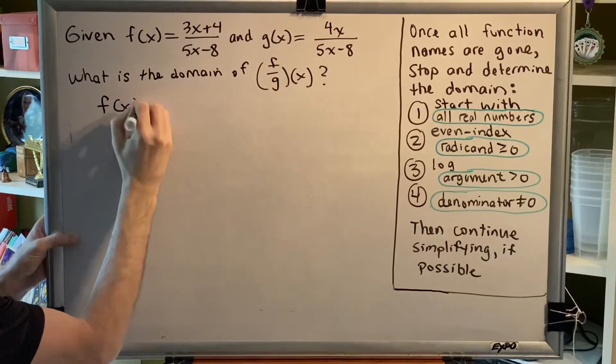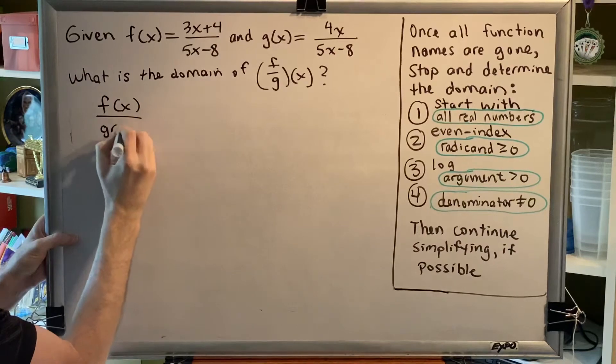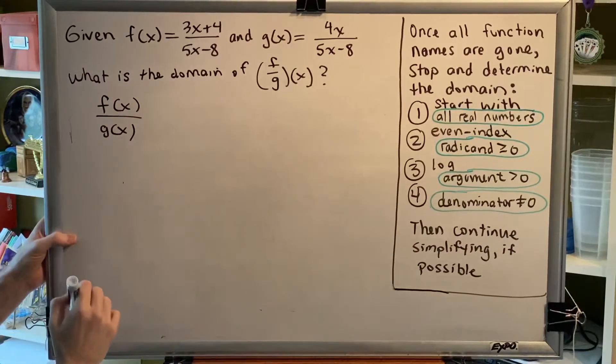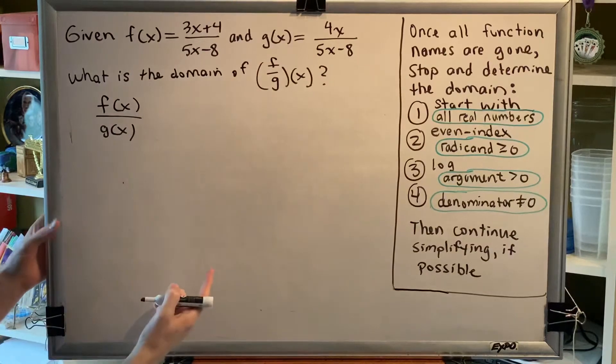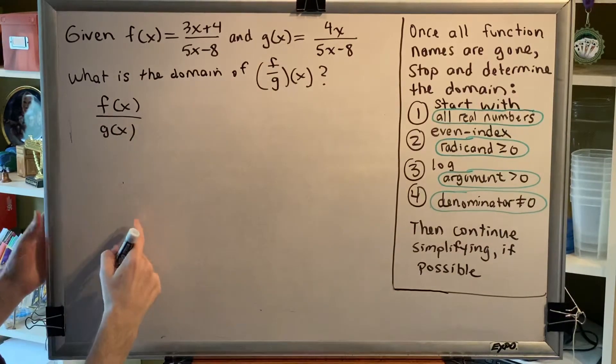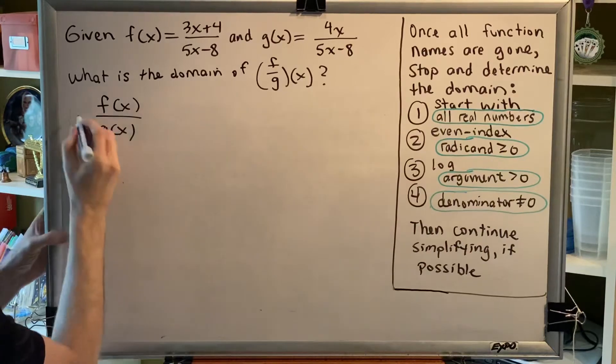So we have f of x divided by g of x. And interestingly in this problem, both f of x and g of x are fractions. So when we substitute, we're going to have something of the form of fraction over fraction.